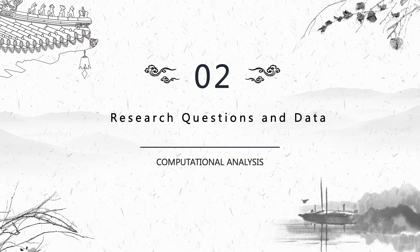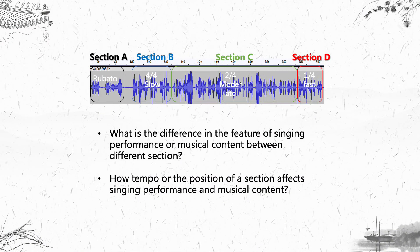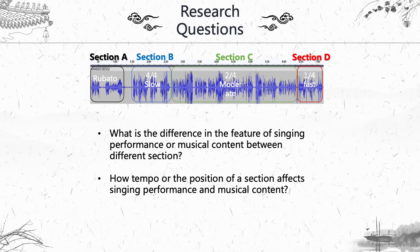After getting some background knowledge, we can move to research questions and data. We still have to think about tempo, the most important characteristic of banzi opera. Our question is generally about what are the differences in features of singing performance or music content between different sections, and how tempo or the position of a section affects singing performance and music content. In the next slide we will list the features we are interested in.